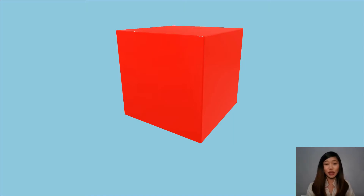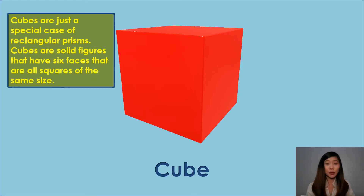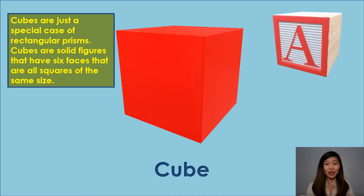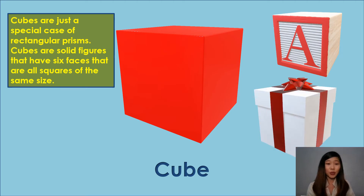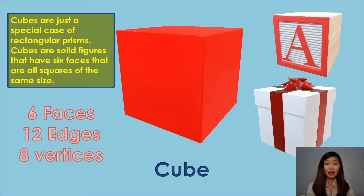Let's move to this figure. This is a cube. Cubes are a special case of rectangular prisms — solid figures that have six faces that are all squares of the same size. Since a square is a rectangle, a cube has six faces that are all rectangles, so a cube is a rectangular prism. Examples of a cube include a wooden letter block and a gift box. A cube has six faces, twelve edges, and eight vertices.